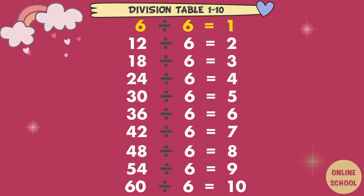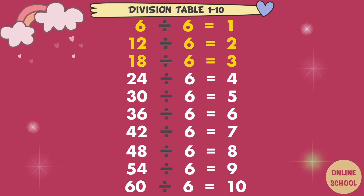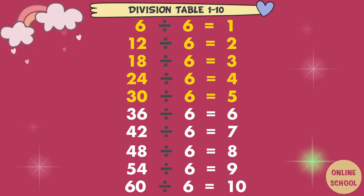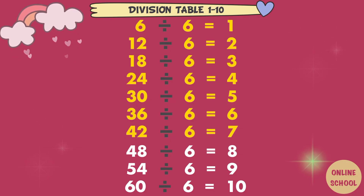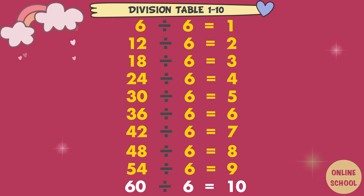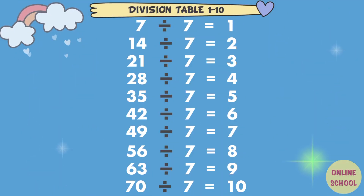6 divided by 6 equals 1. 12 divided by 6 equals 2. 18 divided by 6 equals 3. 24 divided by 6 equals 4. 30 divided by 6 equals 5. 36 divided by 6 equals 6. 42 divided by 6 equals 7. 48 divided by 6 equals 8. 54 divided by 6 equals 9. 60 divided by 6 equals 10. Divided by 7.